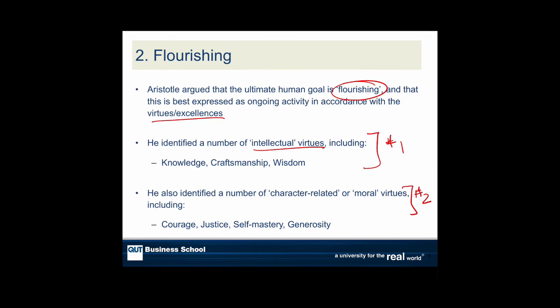The first are the intellectual virtues, about reason — he emphasises strongly our rationality. Things like knowledge, craftsmanship — the ability to build things and do things really well — and wisdom. These are intellectual virtues we should try to develop. Then he also developed character-related, or moral, virtues — which are, of course, what we're most interested in: courage, justice, self-mastery, and generosity. These form a list of particular virtues.